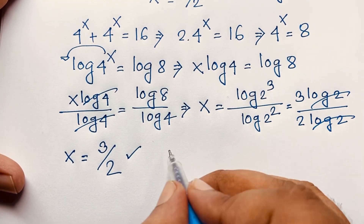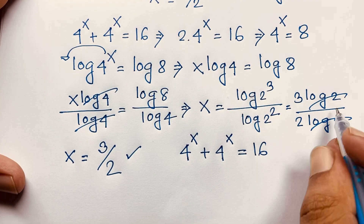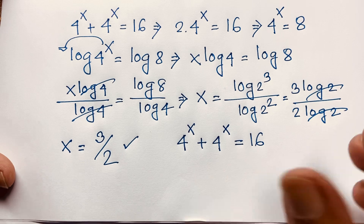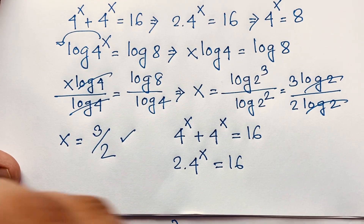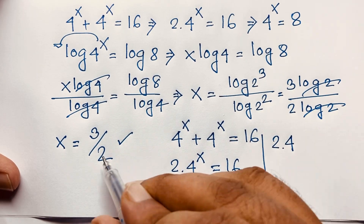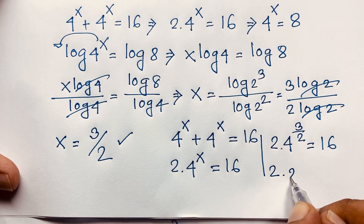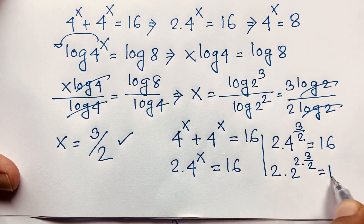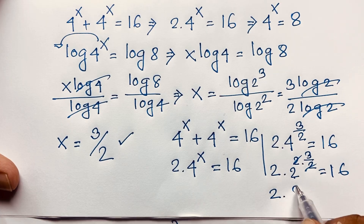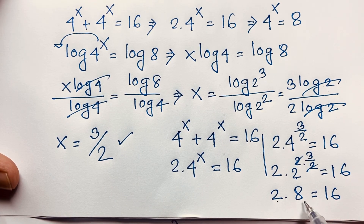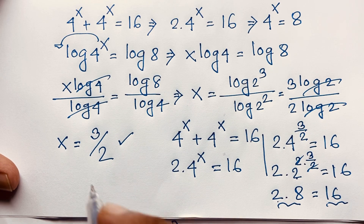Now let's verify our answer. The original question is 4 to the power x plus 4 to the power x is equal to 16. This becomes 2 times 4 to the power (3/2) is equal to 16. Writing 4 as 2 to the power 2: 2 times (2 to the power 2) to the power (3/2) equals 16. This gives 2 times 2 to the power 3, which is 2 times 8 equals 16. So 16 equals 16 — the left-hand side equals the right-hand side.